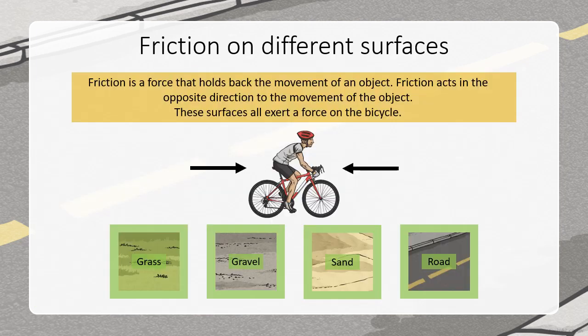There are different surfaces — grass, gravel, sand, and road. Each of these surfaces creates different friction. Friction is a force that stops or slows down a moving object. Friction always acts in the opposite direction of motion.